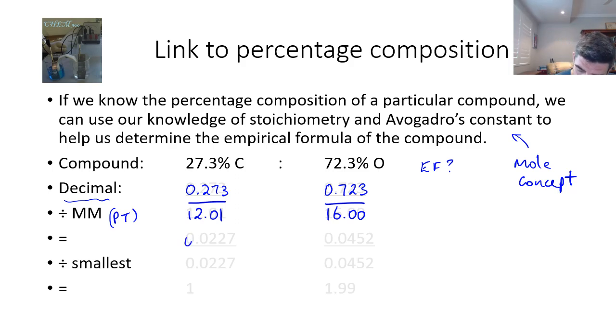When we do that, the value for carbon is 0.0227 and the value for oxygen is 0.0452, rounded to three significant figures. Our next step is to look for which of these is the smallest. So obviously this one is the smallest.